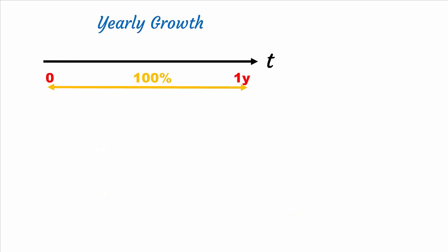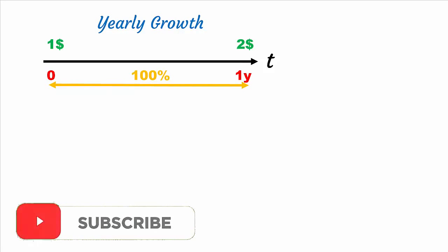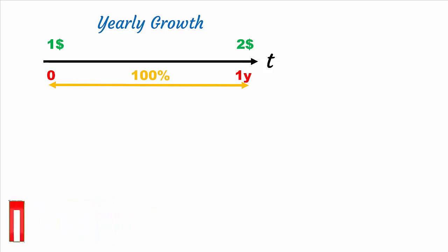Let us take an example of 100% annual growth rate. This means one dollar in the beginning will become two dollars at the end of one year. But this growth from one to two dollars is not abrupt. It is not the case that until the 364th day there was no growth, and on the next day it grew into two dollars.